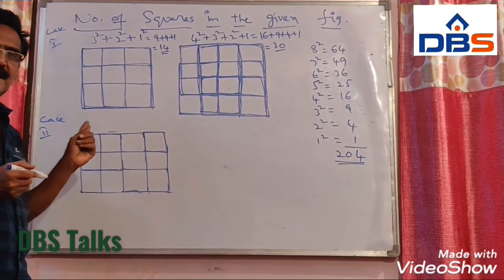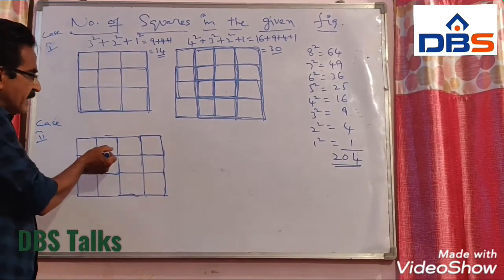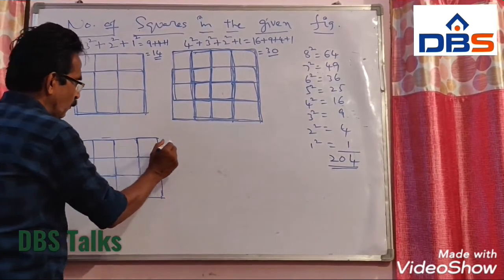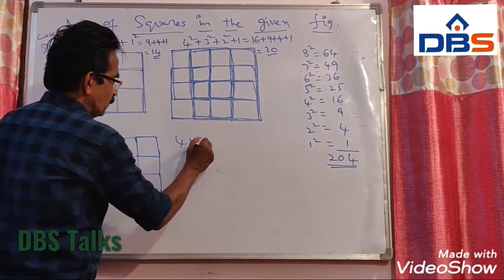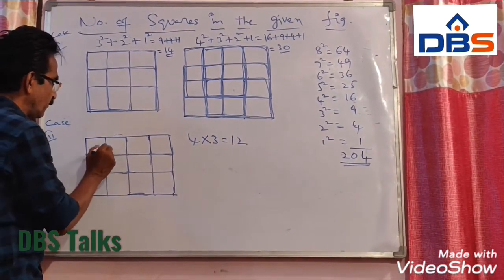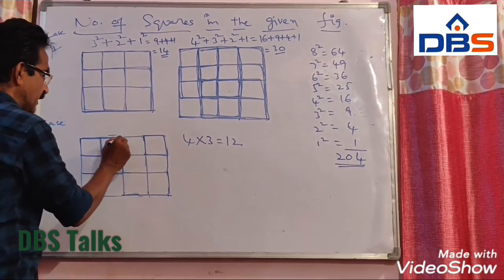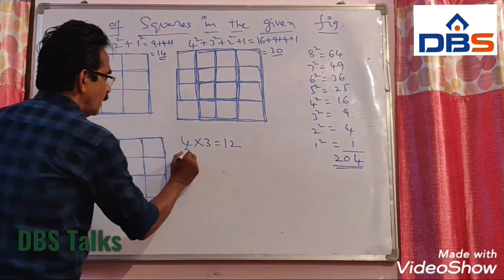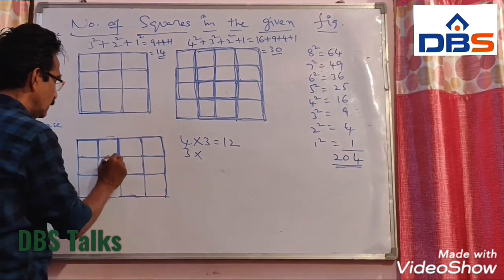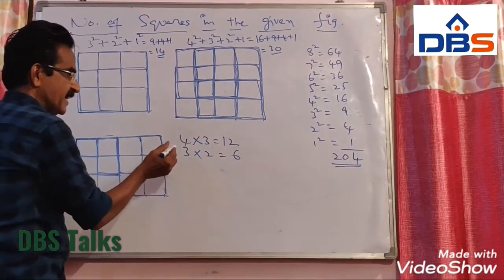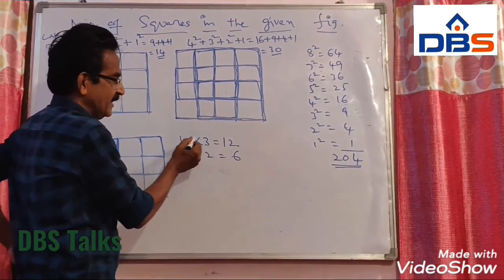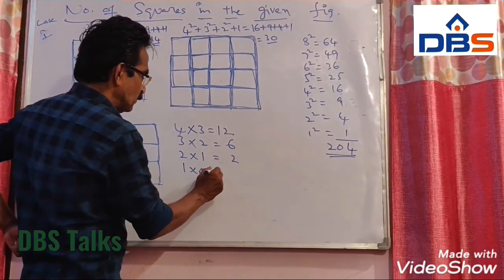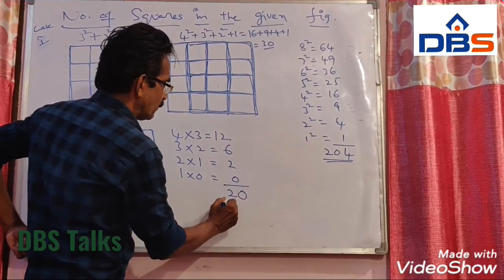Now let us consider the second case where the number of rows and columns are unequal. In this figure there are 3 rows and 4 columns. So 4 into 3 — 12 smallest squares are there. Next bigger size: horizontally 3, vertically 2 — so 3 into 2 is 6. Then the next one is 2 into 1, that is 2. And the next one will be 1 into 0, that is 0. So the total number of squares will be 20.